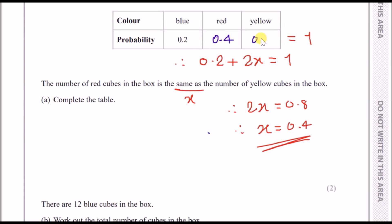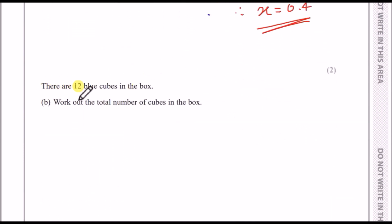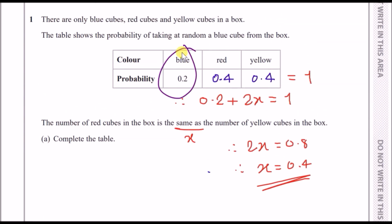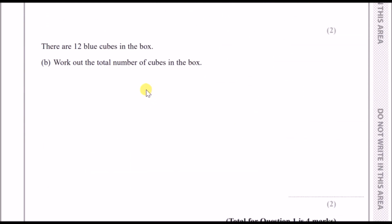For 1b, there are 12 blue cubes in the box and we need to work out the total number of cubes. From the table we can see that probability 0.2 for blue, in other words 20% of all the cubes must be blue. So 12 is equivalent to 20% of everything in the box. That means 10% must be 6 if you halve it, and then multiplying it by 10 means a complete set must be 60.